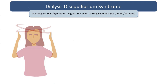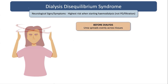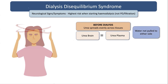This is not going to happen in peritoneal dialysis — it's very particular to hemodialysis. Before someone initiates on dialysis, they have quite high urea levels, but that urea is spread evenly across the tissues. The urea in the brain and the urea in the plasma will be much the same, so water is not going to be pulled in any particular direction — water will be even on both sides.